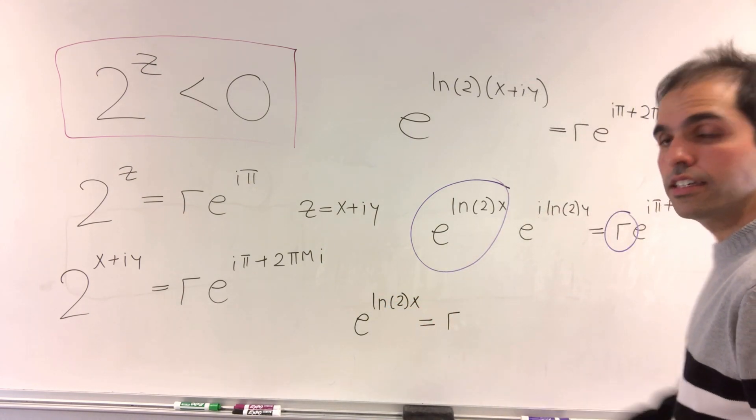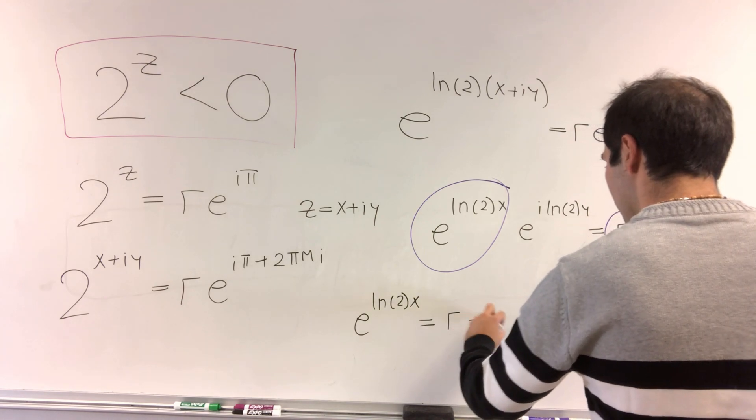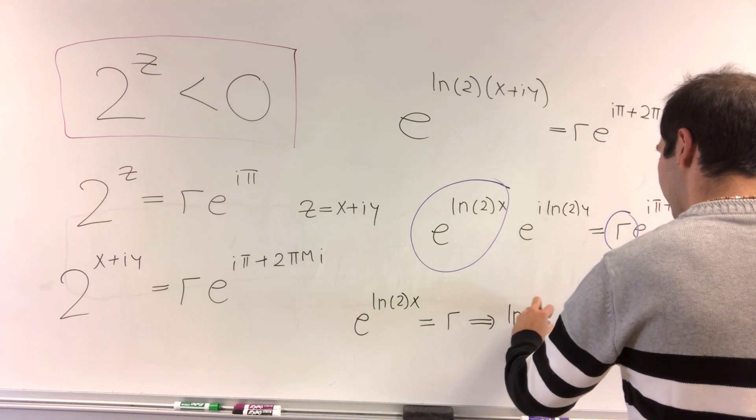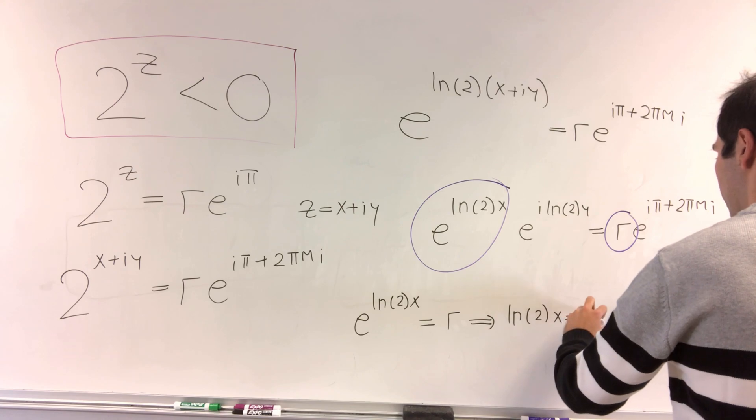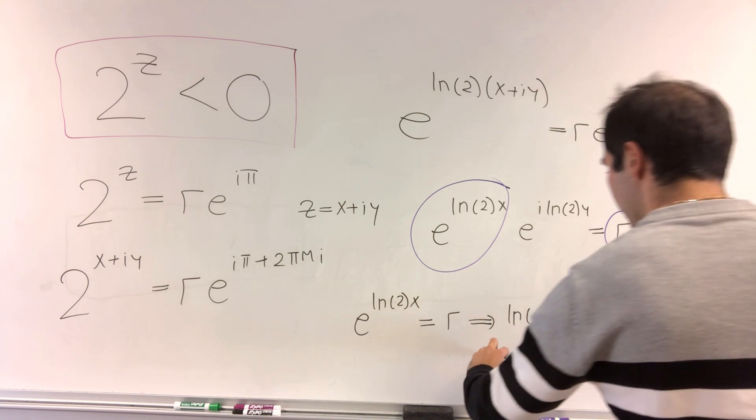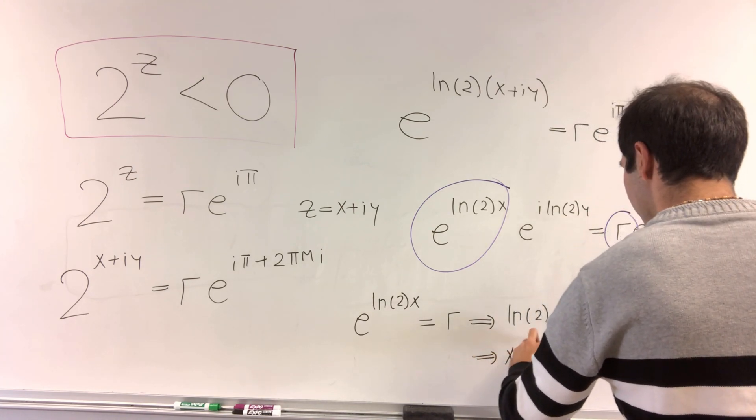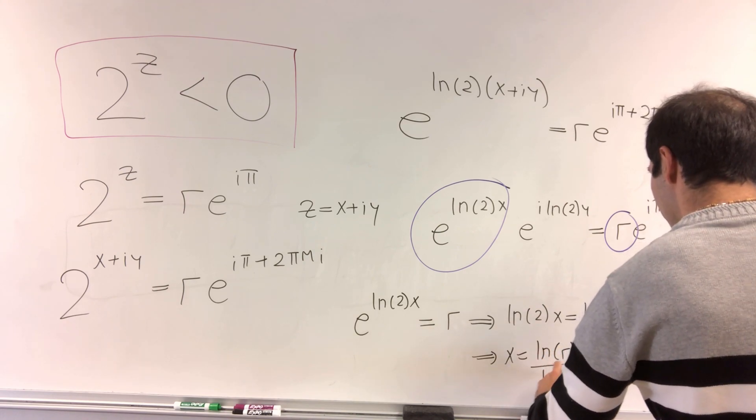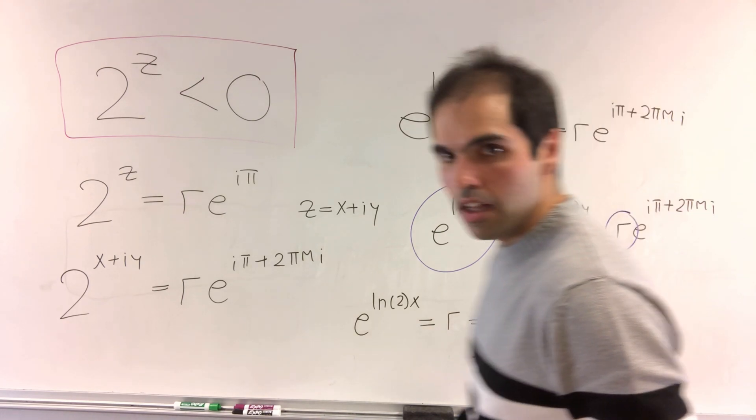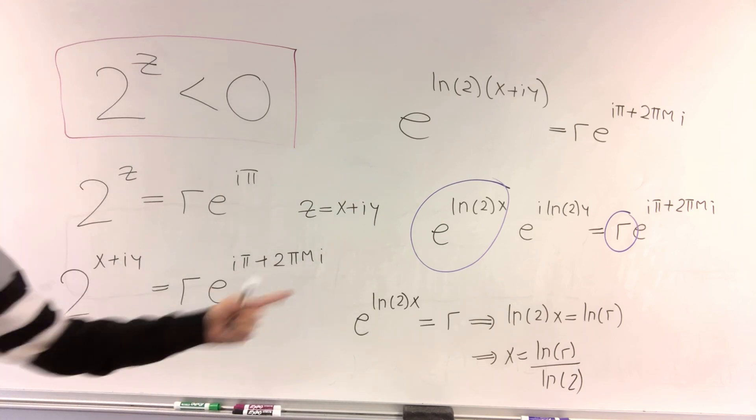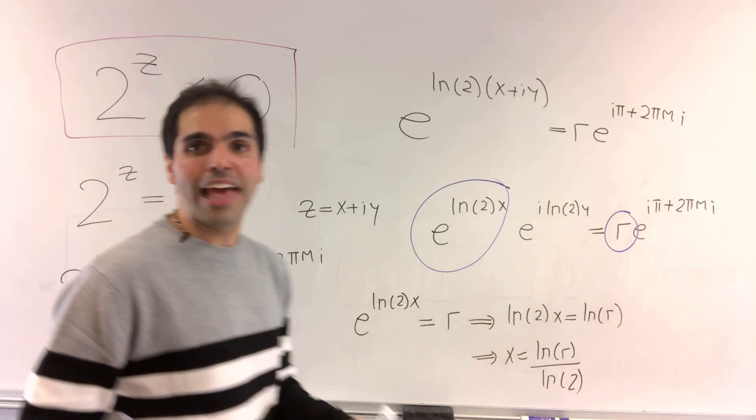r is any positive real number. And that gives you ln of 2 x equals ln of r, and that is x equals ln of r over ln of 2. But actually, the interesting thing is then, what is x?